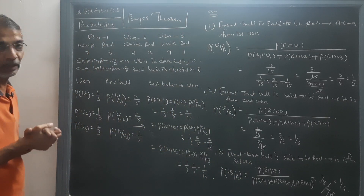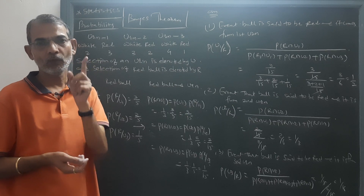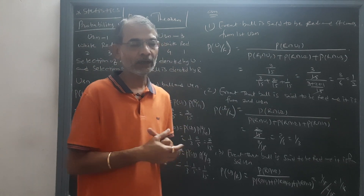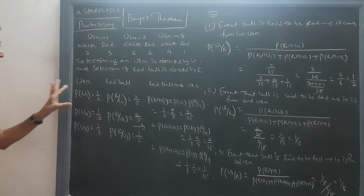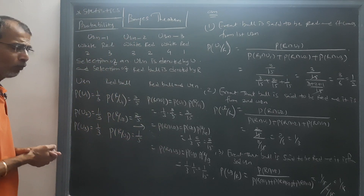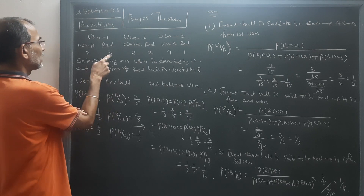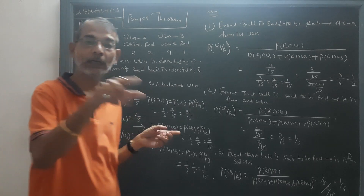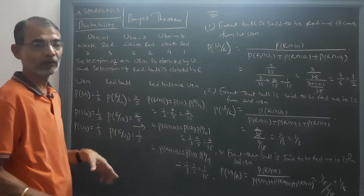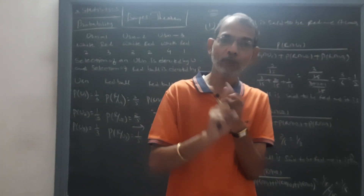To recap: there are three urns — each urn contains 2 white and 3 red, 3 white and 2 red, or 4 white and 1 red ball. First of all, we randomly select an urn, so the probability of selecting each urn is 1/3 for all three. Then we find that given the first urn is selected, the ball is red with probability 3/5. Given the second urn, the probability is 2/5. And for the third urn, it is 1/5.